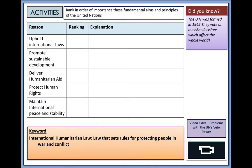There are some fundamental aims and principles of the UN — you could think about whether these would be the biggest or lowest priorities in the current world. A key term to note is international humanitarian law: students often confuse this with human rights in the exam, but it actually refers to laws that set rules for protecting people in war and conflict, so be very specific about that distinction.